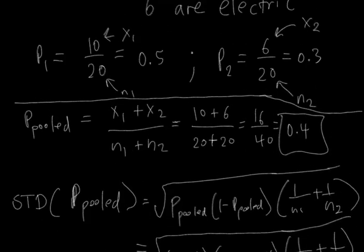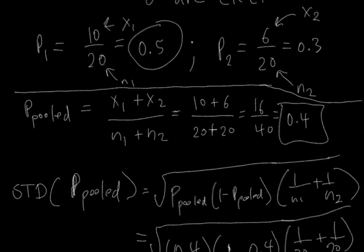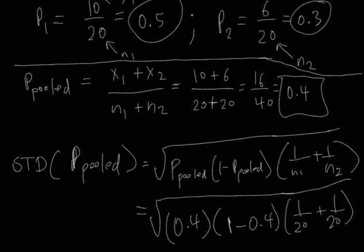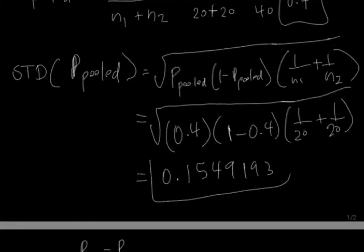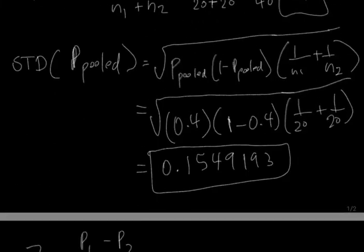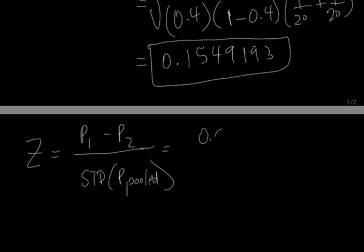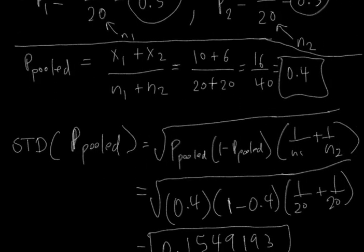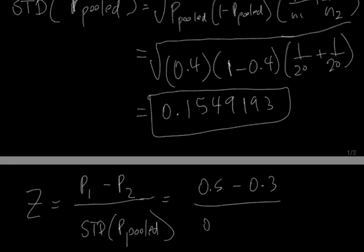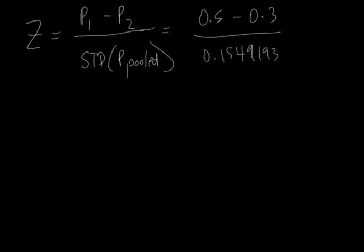In our case, we know that P1 is 0.5, P2 is 0.3, and the standard deviation of the pooled proportion is 0.1549193. So I'm going to fill those in. If we go ahead and do this calculation, what we get is 1.290994.